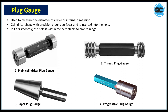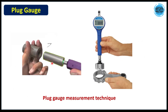The plug gauge has a go side and a no-go side. For the progressive plug gauge, both the go and no-go features are on the same side — the first portion is the go feature and the next portion, with increased dimension, is the no-go feature. The thread plug gauge is used to check internal threads. To verify, we insert the plug gauge into the hole and verify the dimensions.